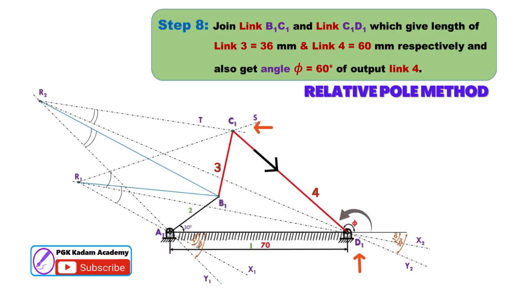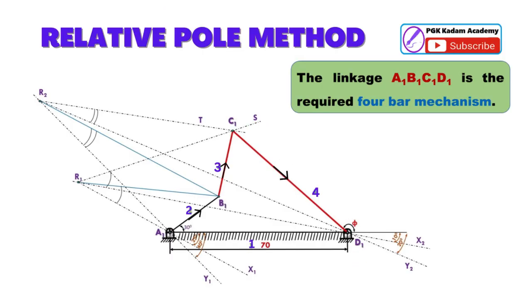The linkage A1B1C1D1 is the required four-bar mechanism.